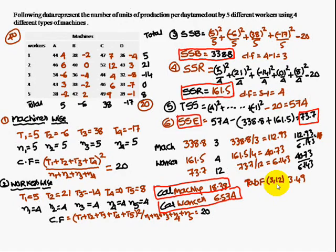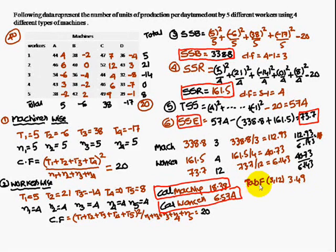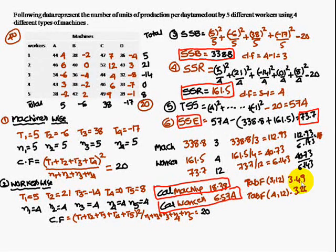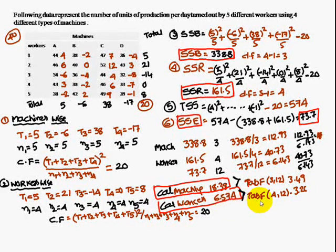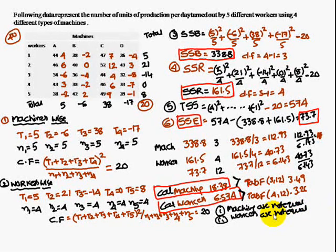The tabulated F for machines at (3, 12) degrees of freedom is 3.49, and for workers at (4, 12) degrees of freedom is 3.26. In both cases, the calculated value is greater than the tabulated value. Therefore, machines do not have equal production capacity and workers do not have equal skill sets.